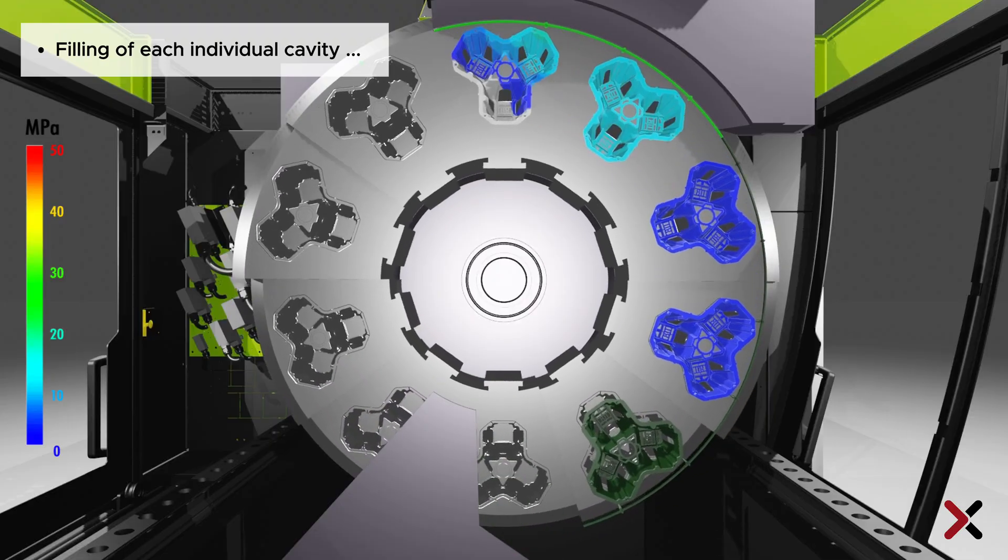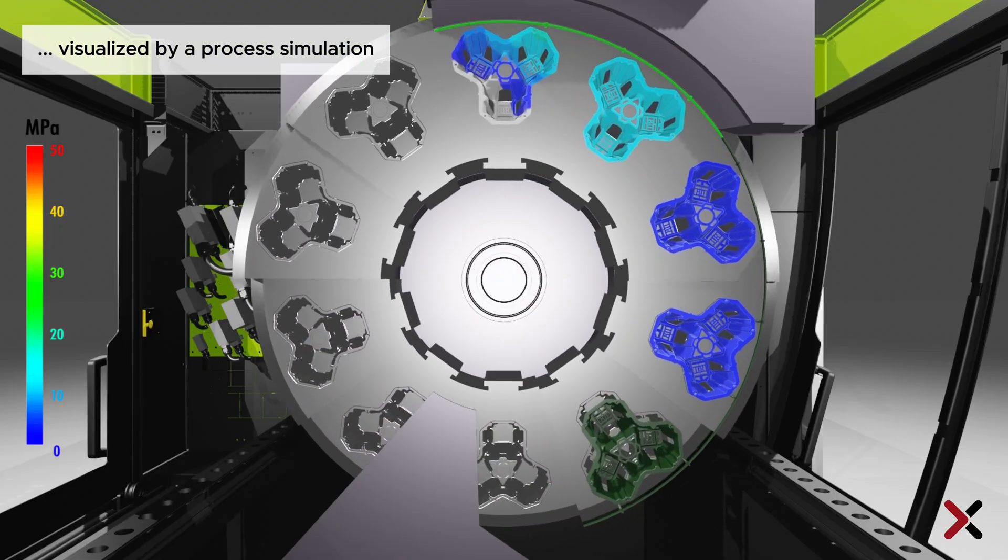This means, the individual cavities in the rotary mold are gradually filled. The individual parts are shaped with effective holding pressure and then cooled in the mold. After cooling, the parts can be demolded and ejected.